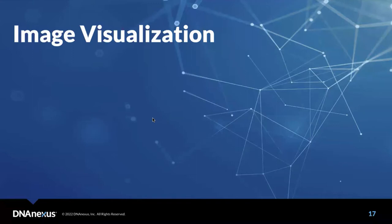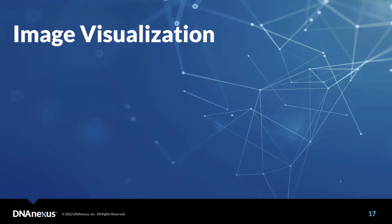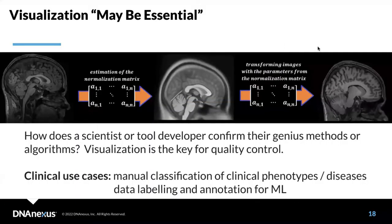Why do we need image visualization? Once we understand the basic file formats on the UK BRAP, we can talk about why visualization is important — particularly for quality control. For example: how does a scientist or tool developer confirm their method or algorithm is working correctly? That's the first use case where visualization is really essential.